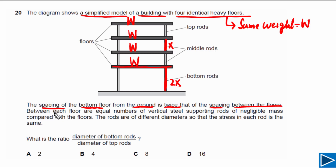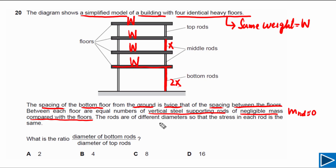Next, it is given that between each floor there are equal numbers of vertical steel supporting rods of negligible mass as compared with the floors. The mass of the rods can be considered very small compared with the mass of each floor. The rods are of different diameters, but the stress in each rod is the same — this is a very important point.